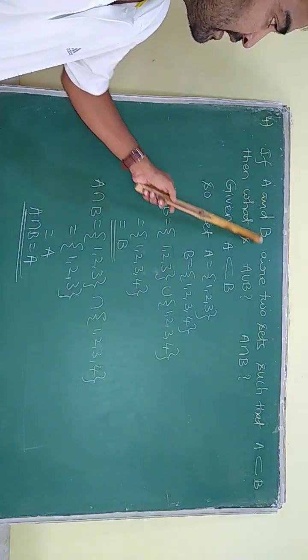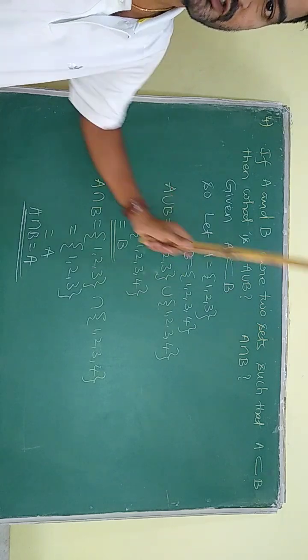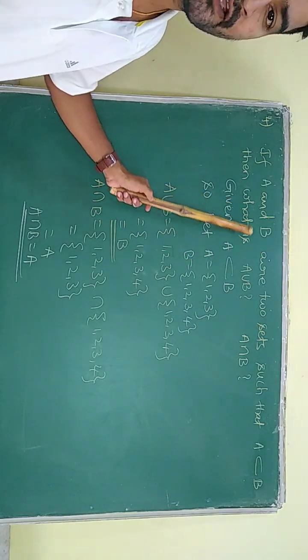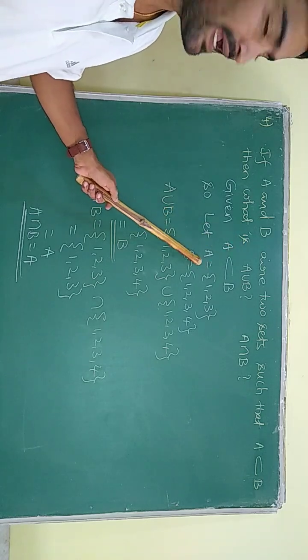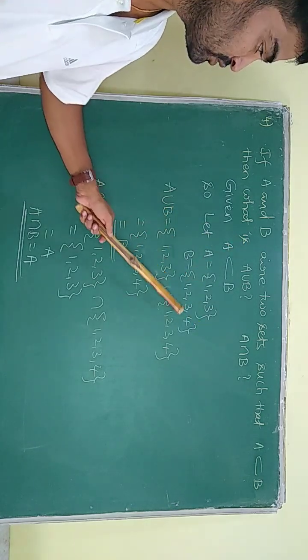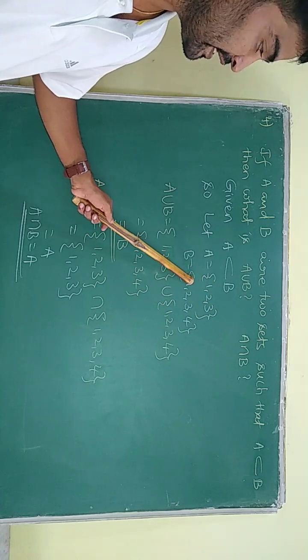See, A and B are two sets such that A is a subset of B, and then we have to find A union B. So we have to assume the two sets A and B as A is {1, 2, 3} and B is {1, 2, 3, 4}.